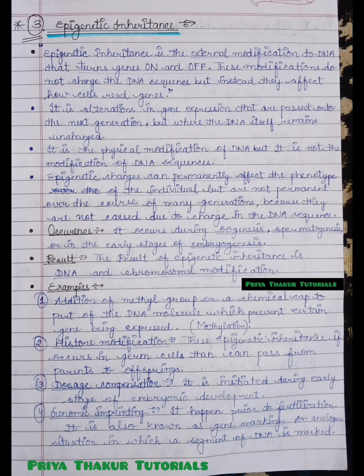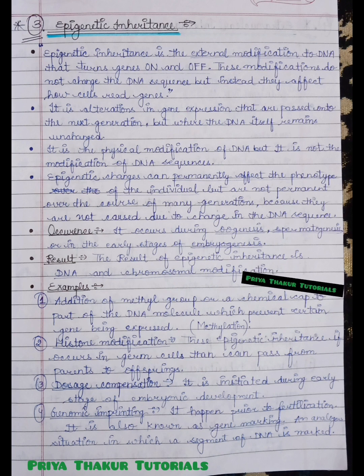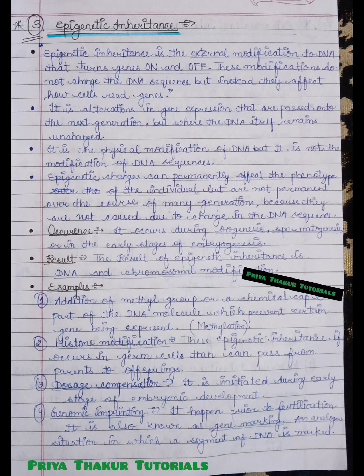Epigenetic inheritance involves alterations in gene expression that are passed on to the next generation, but where the DNA itself remains unchanged. These alterations — meaning changes in gene expression — can be inherited by the next generation while the underlying DNA sequence stays the same.